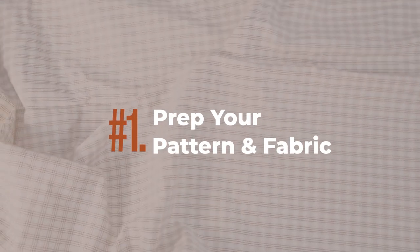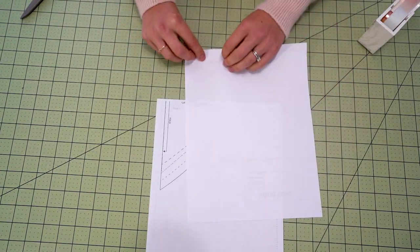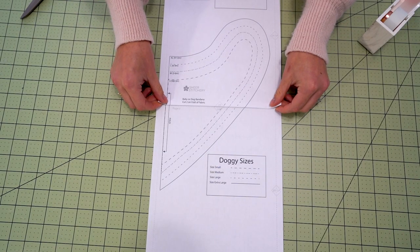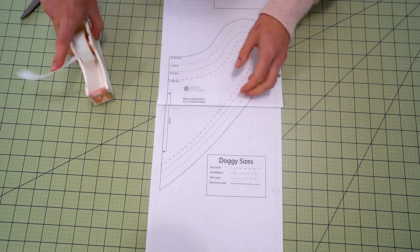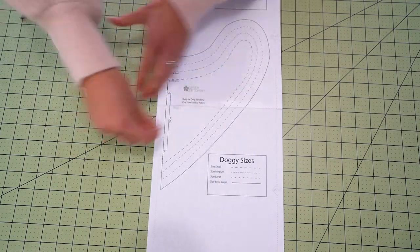Okay so first we're going to prep the pattern and the fabric. So our pattern is just printable on US letter size. I like to fold over the dotted line edges and then just tape it in place to put this pattern together.